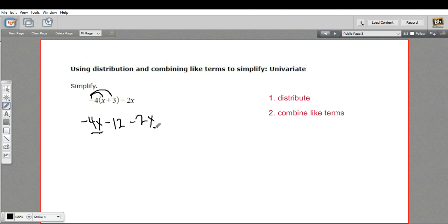I've got a negative 4 and a minus 2. So negative 4 minus 2 is negative 6x. And then I've got this minus 12 here. There's nothing I can combine with that. So this is now as simple as we can make it.